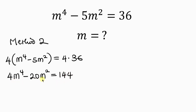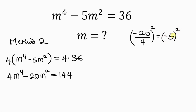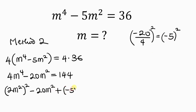Now remember that we're applying the completing the square method. I'm going to be taking the coefficient of m squared, which is negative 20, and dividing it by the degree, which is 4, then squaring the result. Negative 20 divided by 4 is negative 5, and this is raised to the 2. I'm going to be adding this to both sides of the equation. So I'll add negative 5 squared to the left and also add negative 5 squared to the right.